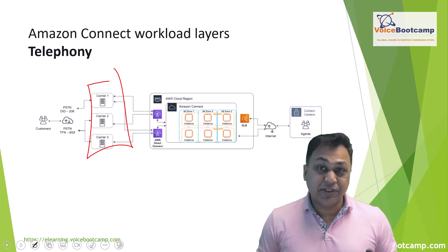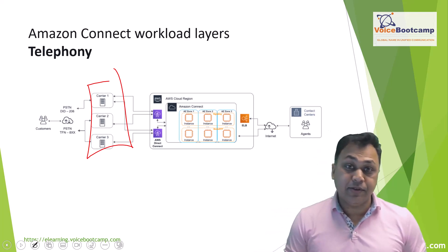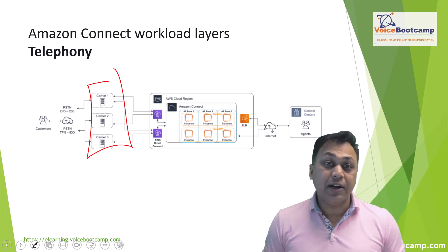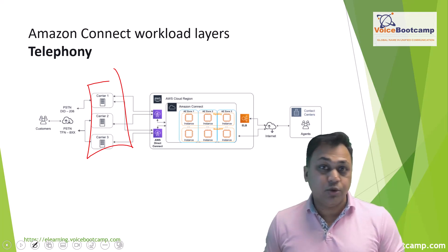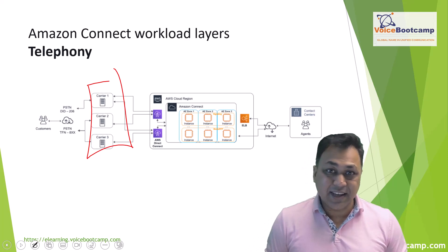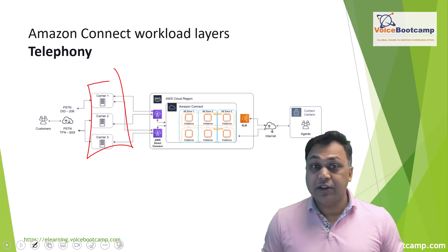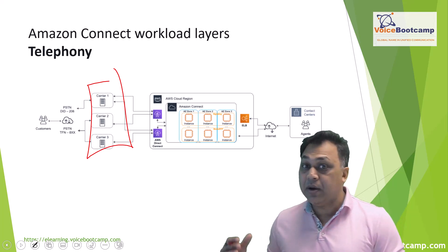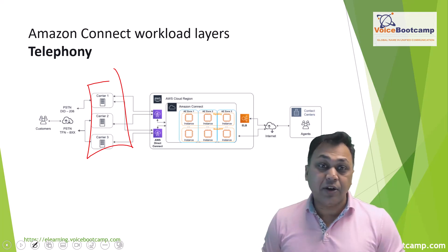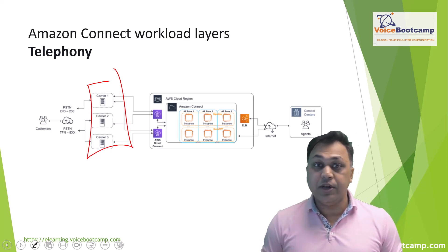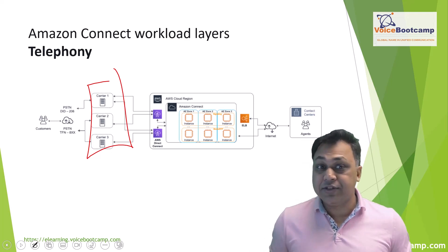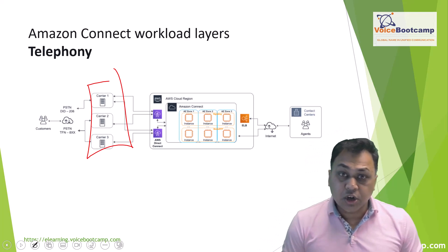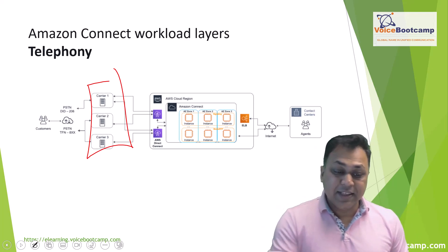From a capacity, platform resiliency, and scaling perspective, all are handled by the Amazon team — this is not something you have to worry about. The good thing about Amazon Connect is you don't have to worry about the operating system, servers, upgrading, or licensing. It simply allows you to scale your deployment from 10 agents to 10,000 agents without worrying about managing the underlying platform or telephone infrastructure capacity.